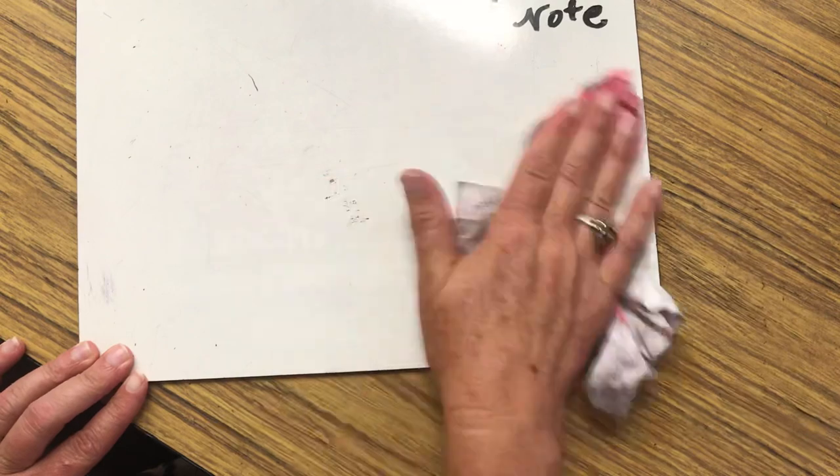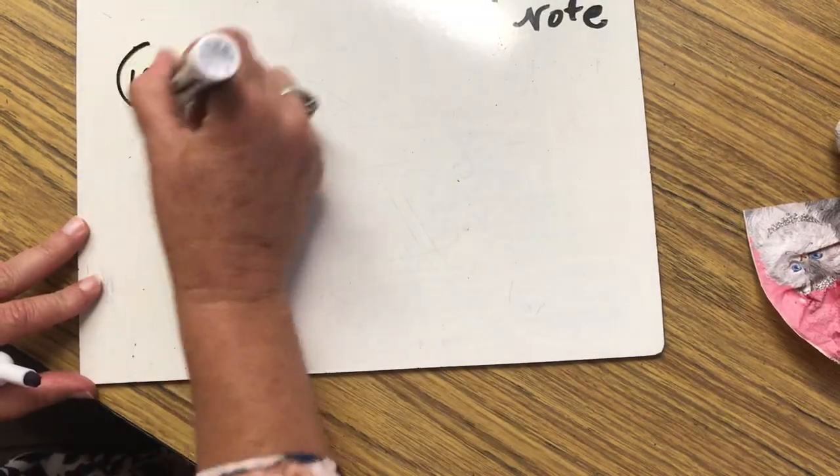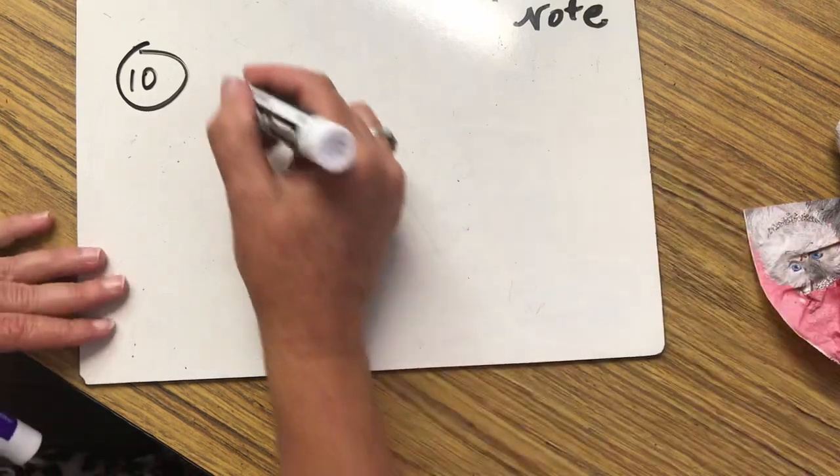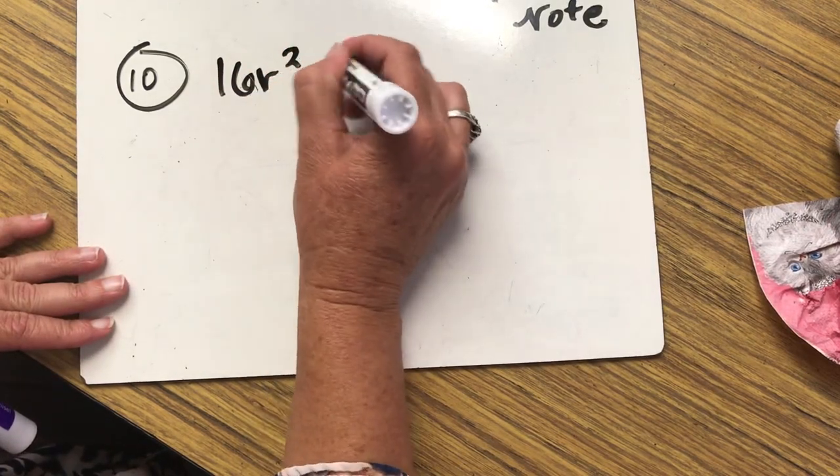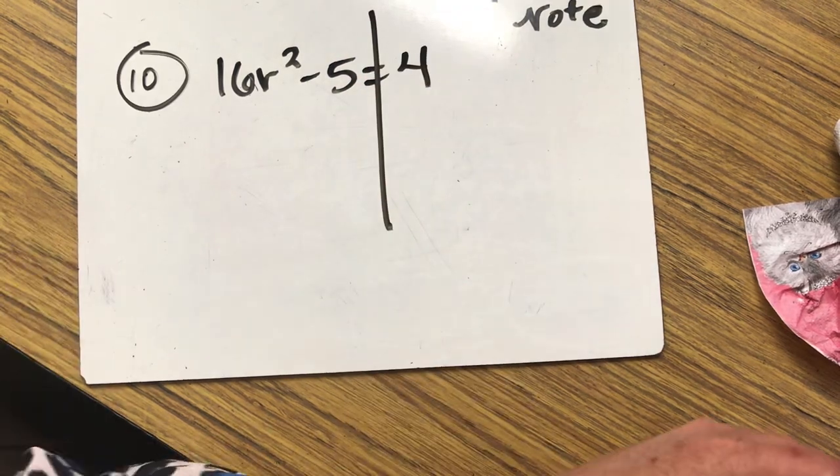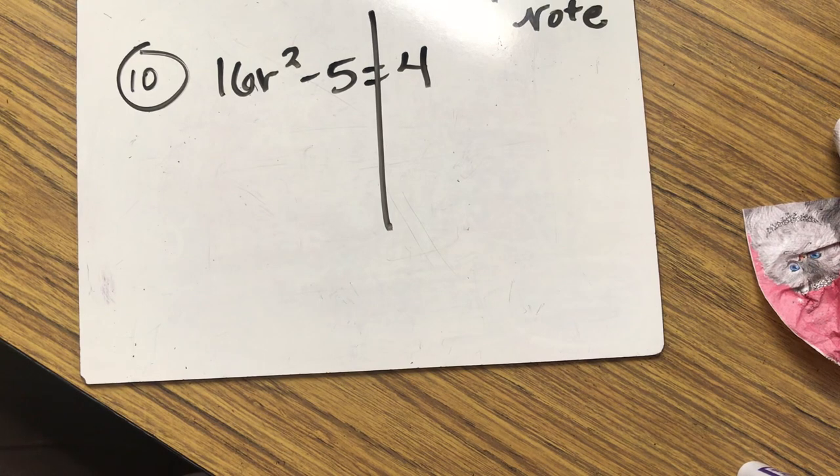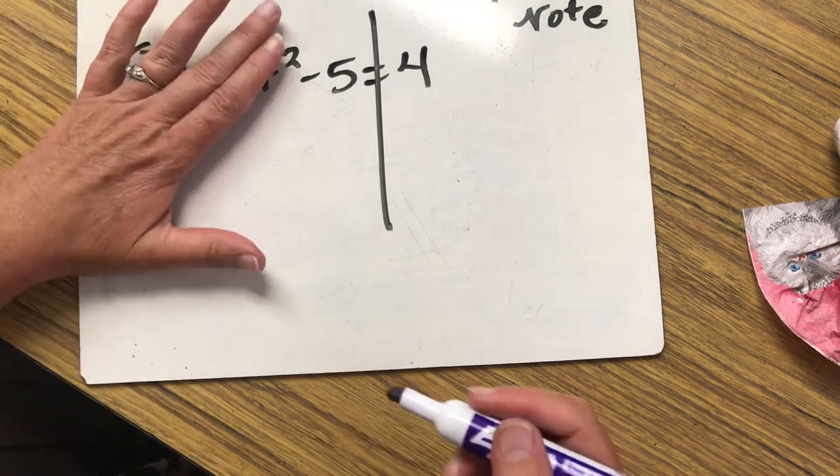Let's do question number 10. Here we go. Question number 10. So we have 16 R squared minus 5 is 4. Draw the line. You can always pause the video and try it yourself before I show you how to do it.